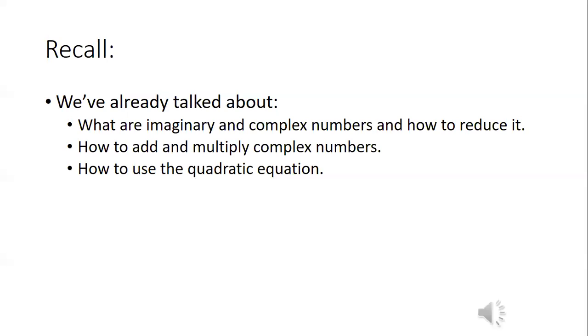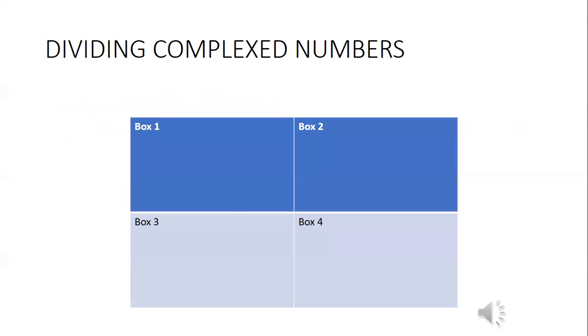We talked about adding and multiplying complex numbers. That was our 5.9a. And we also talked about how to use the quadratic equation formula: X equals negative B plus or minus square root of B squared minus 4AC divided by 2A. And so we're going to keep going from there.